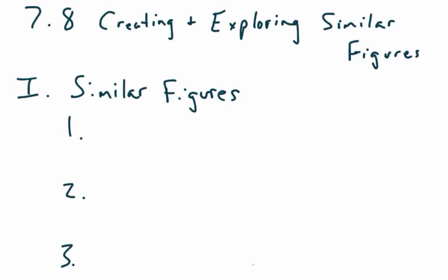Alright, today we're doing 7-8, Creating and Exploring Similar Figures. If you're using our book, I really encourage you to check out page 359. They talk about how movies sometimes are made using similar figures — if you want the Empire State Building with a gorilla climbing up the outside, you either need a ginormous gorilla, or it's a whole lot easier to just make a similar figure, a model maybe two or three feet tall, and have your gorilla do that.